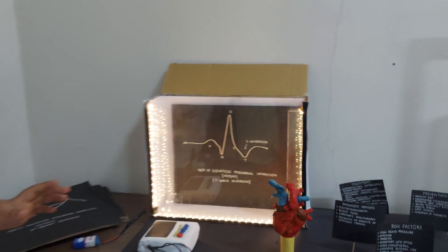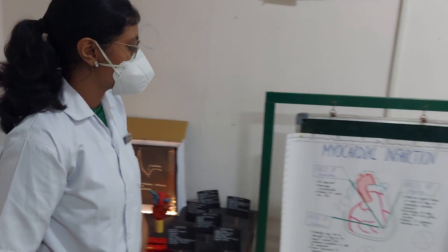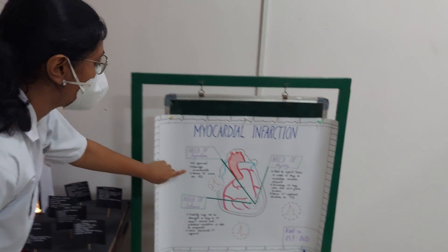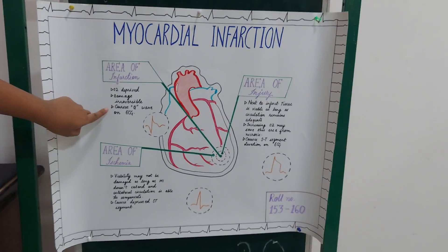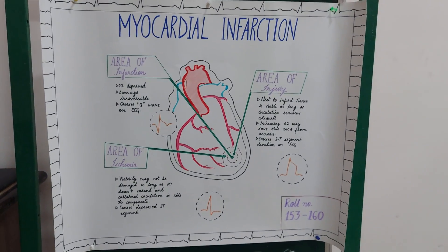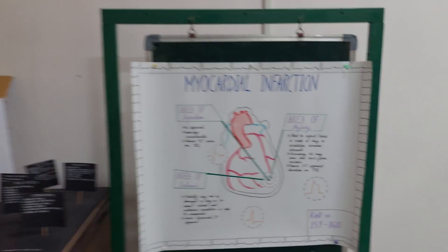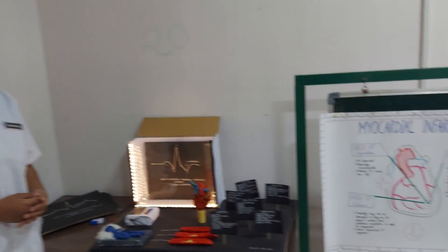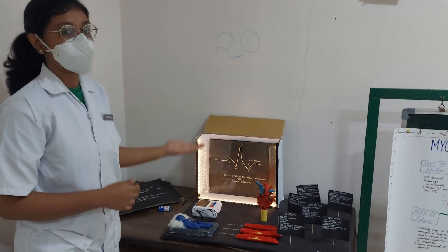In a chronic or old case of myocardial infarction, there would be a characteristic Q wave. Now coming to the pathophysiology, that is how exactly the ECG looks like this.